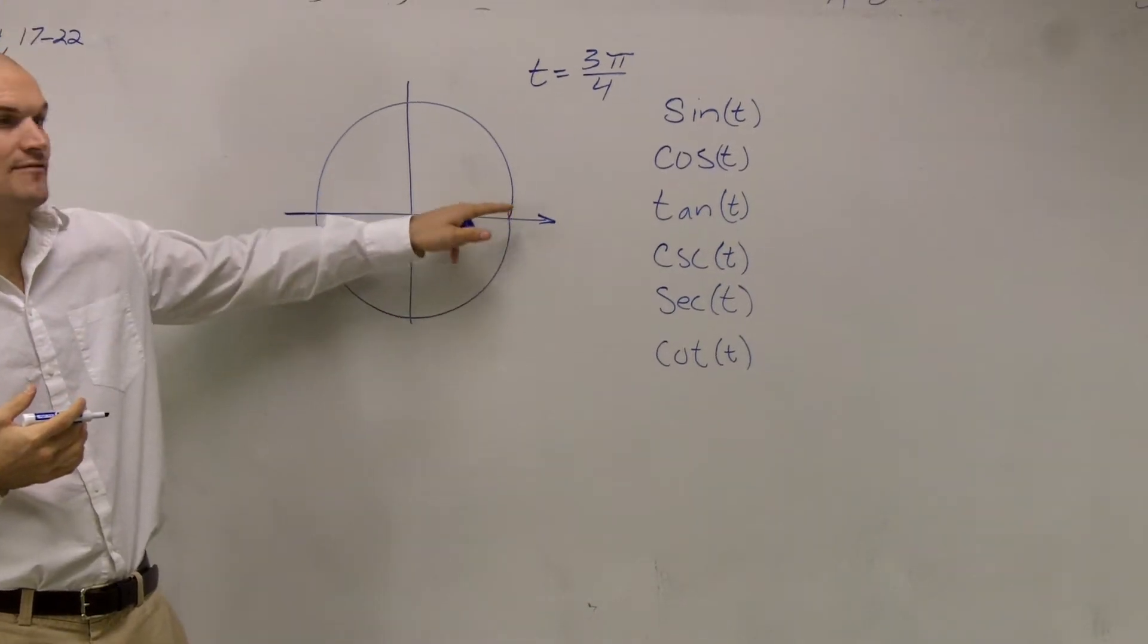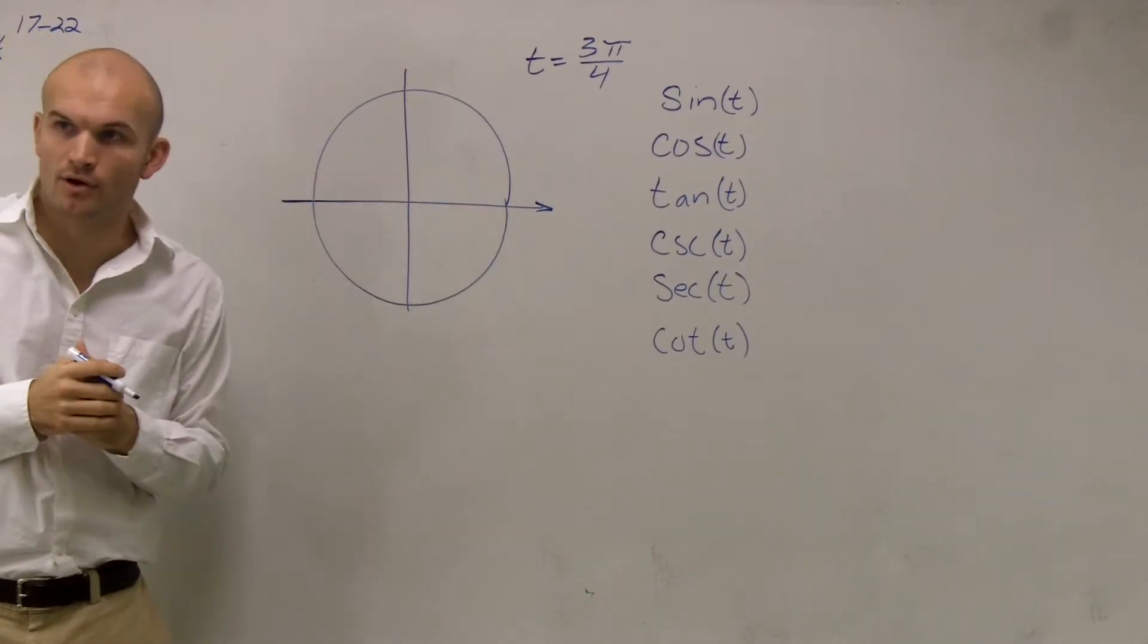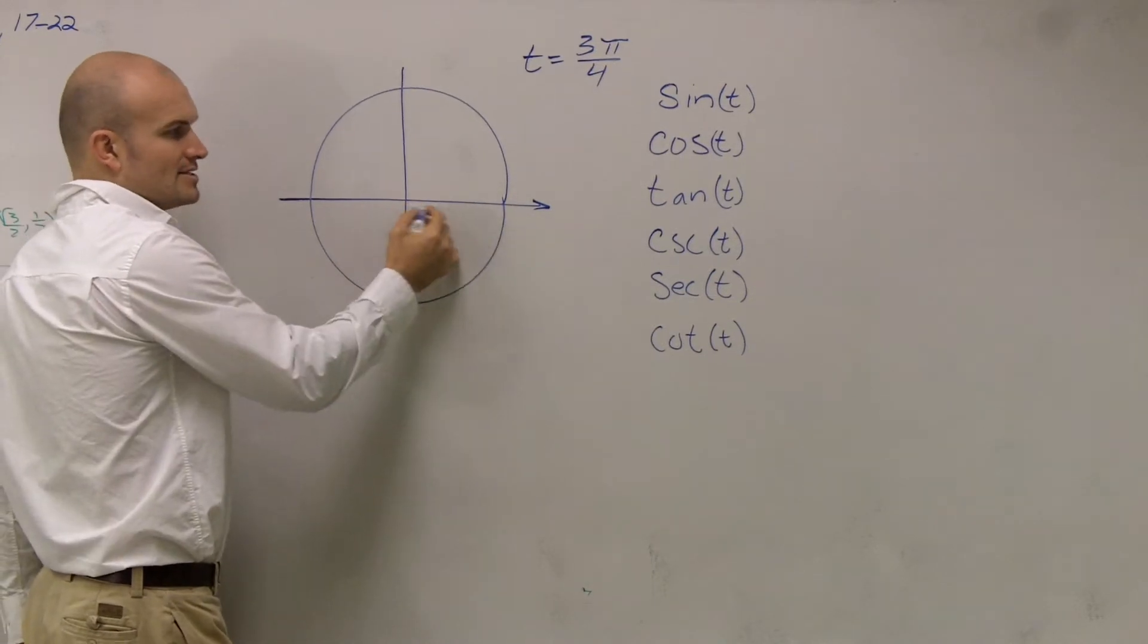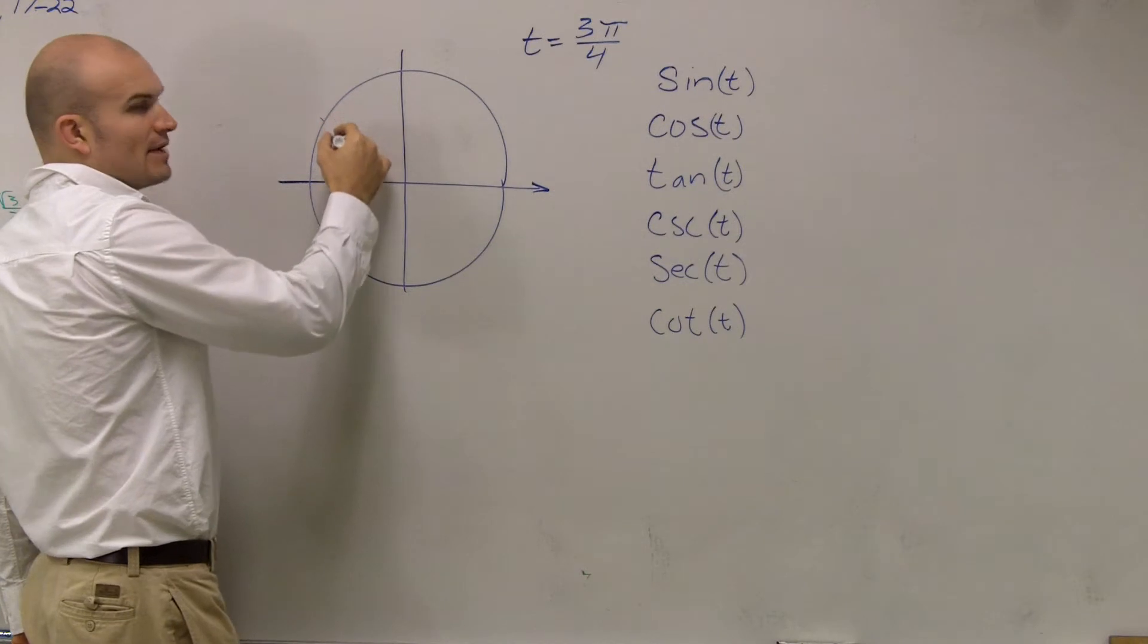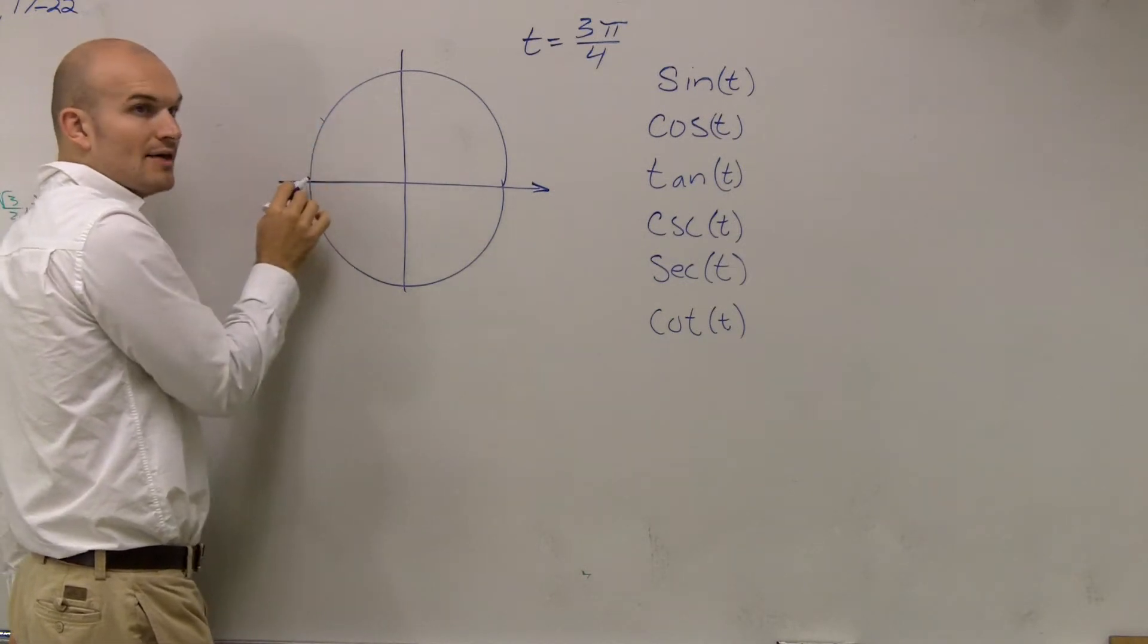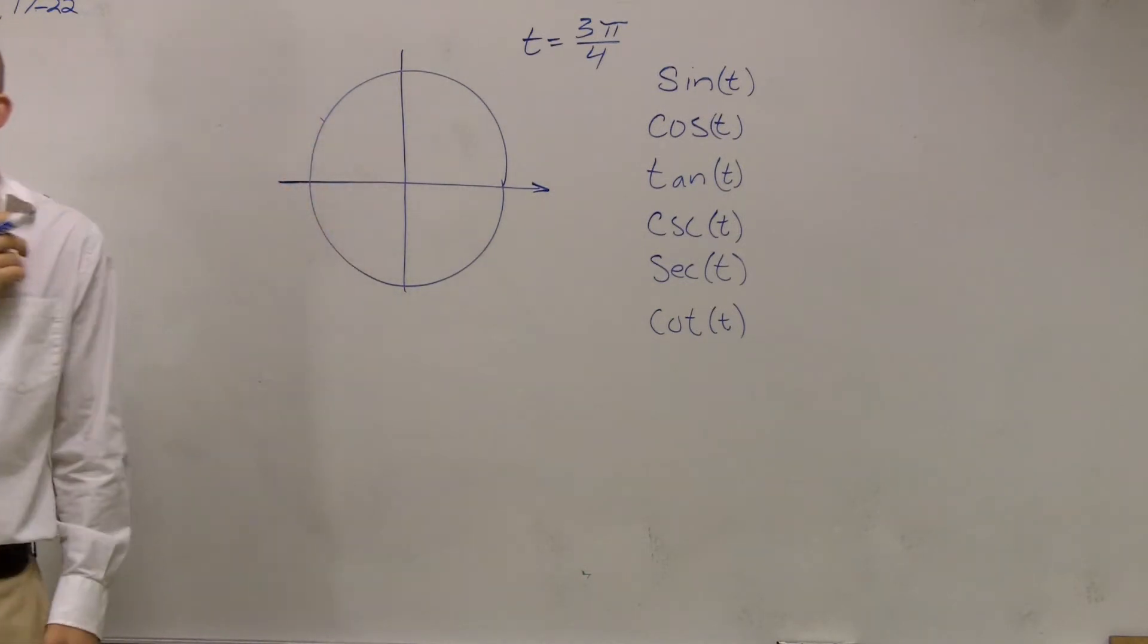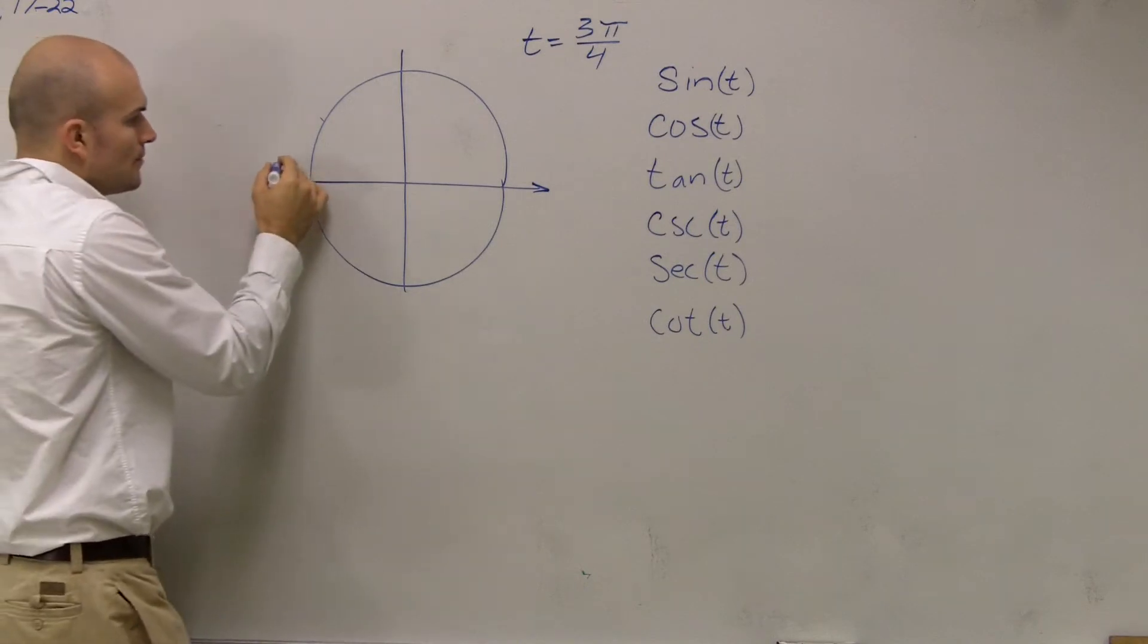So then what I need to do is figure out, well, where is 3π/4? Remember guys, a radian is our radius wrapped around a circle. So that's like one radian, two radians, three radians. And then halfway around is 3.14159 dot dot dot radians, which we just call π.